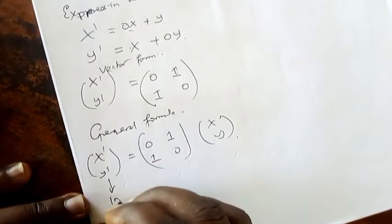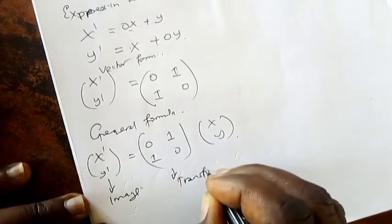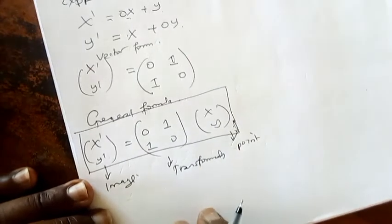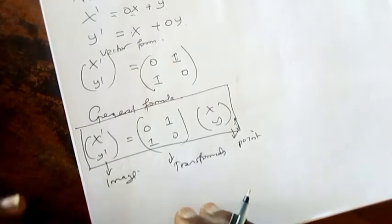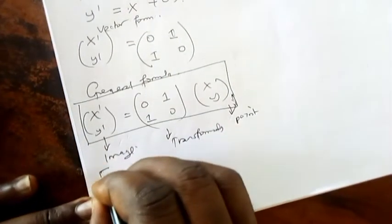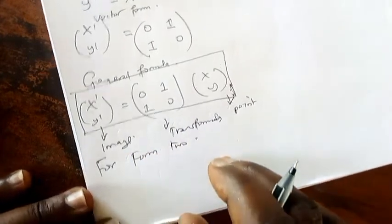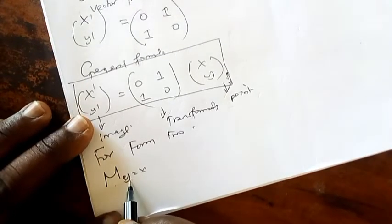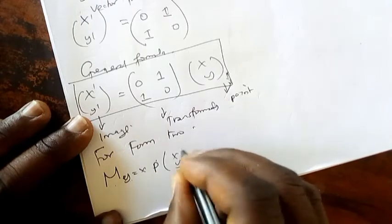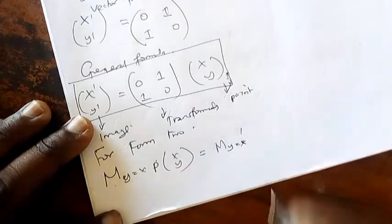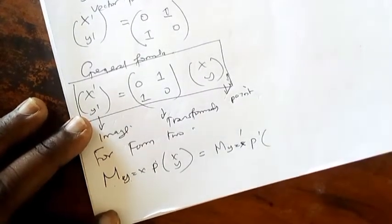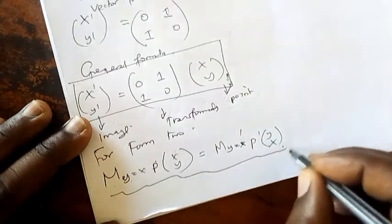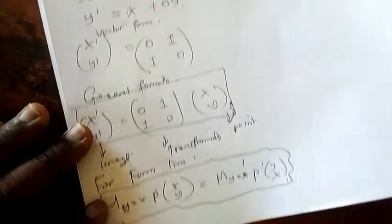So this general formula we can use to solve various problems. There's also form 2. In form 2, the general formula is: M subscript y=x of point (x, y) equals M subscript y=x dash of the point, which means you exchange - y value goes up, x value goes down to become (y, x). This will also help. Using form 2 or form 1, you get the same answer.